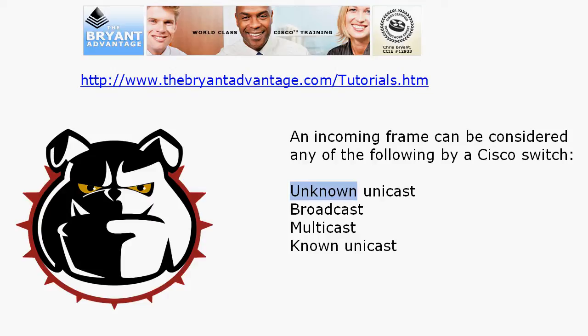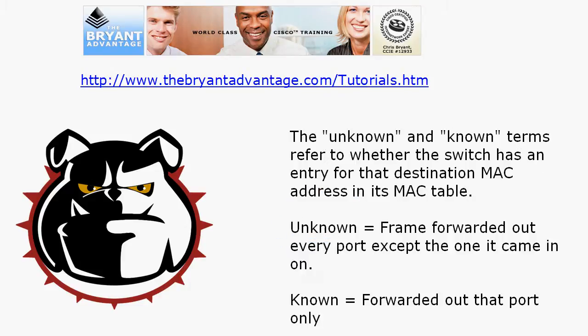The reason I highlighted 'unknown' there is that that particular term really threw me when I first started studying for my CCNA, because I thought: if it's a unicast, how can the address be unknown? What those terms — known and unknown — actually refer to is whether the switch has an entry for that destination MAC address in the table we just looked at.